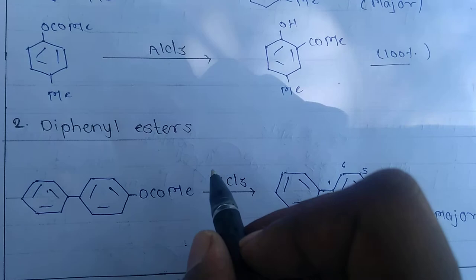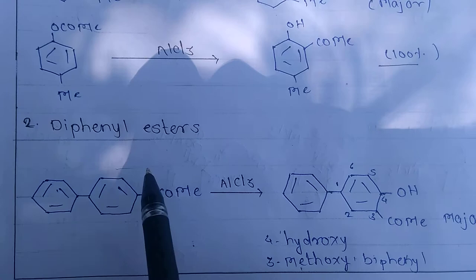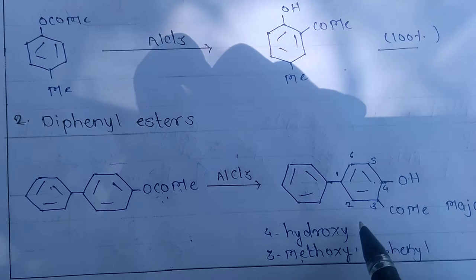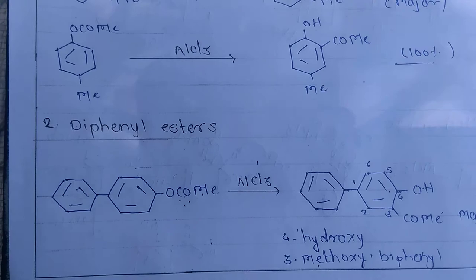The second application is the formation from diphenyl esters: when a Lewis acid reacts with a diphenyl ester, the formation of 4-hydroxy-3-methoxy-biphenyl takes place — the Lewis acid attacks the phenolic ester and 4-hydroxy-3-methoxy-biphenyl is the major product. In general, low temperature favors the para product and high temperature favors the ortho product.